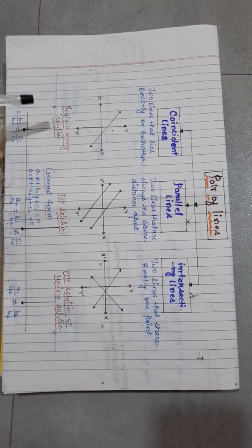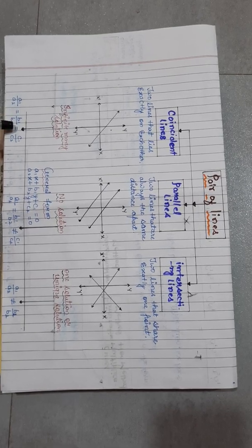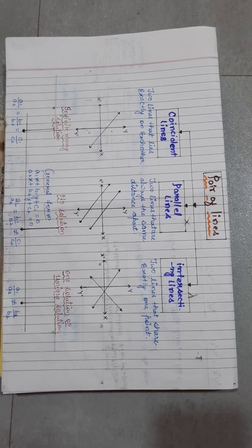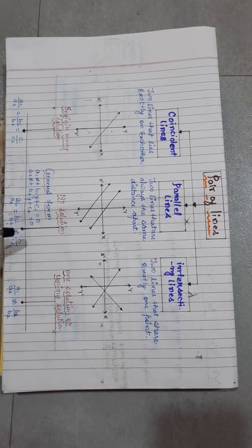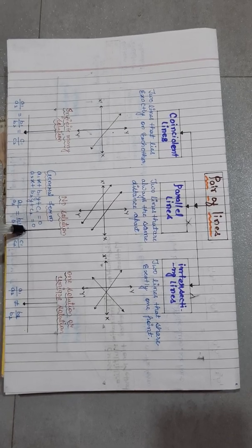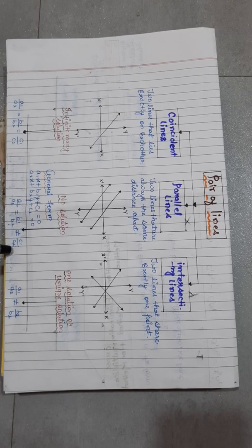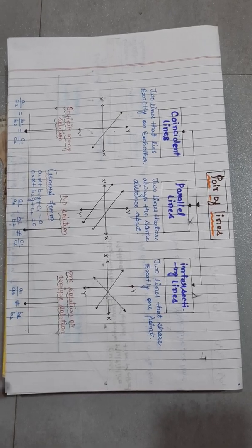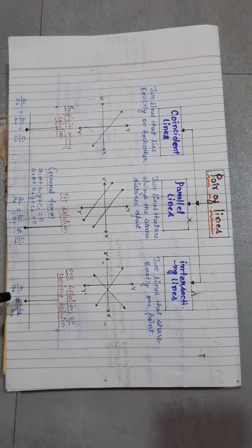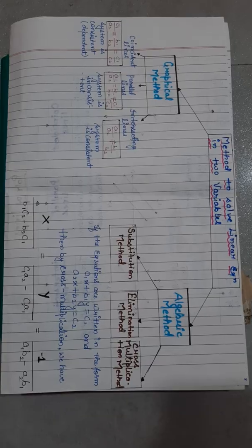For infinite solutions, the condition is a1/a2 = b1/b2 = c1/c2. For no solution, the condition is a1/a2 = b1/b2 ≠ c1/c2. For a unique solution, the condition is a1/a2 ≠ b1/b2.